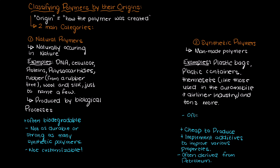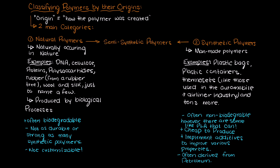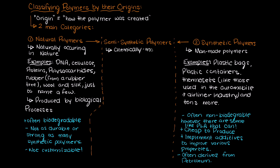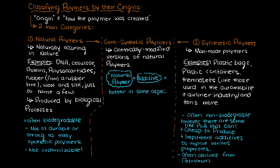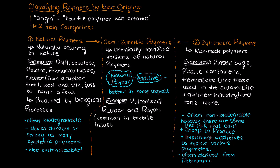Lastly, we do have a field somewhere in the middle. This type of polymer is considered semi-synthetic polymers, which are chemically modified versions of natural polymers. In this class of polymers we take a natural polymer and apply something to it to make it better for a certain application. An example is vulcanized rubber like the tires in your car, or rayon, which is a modified cellulose-based polymer and a commonly used textile material.